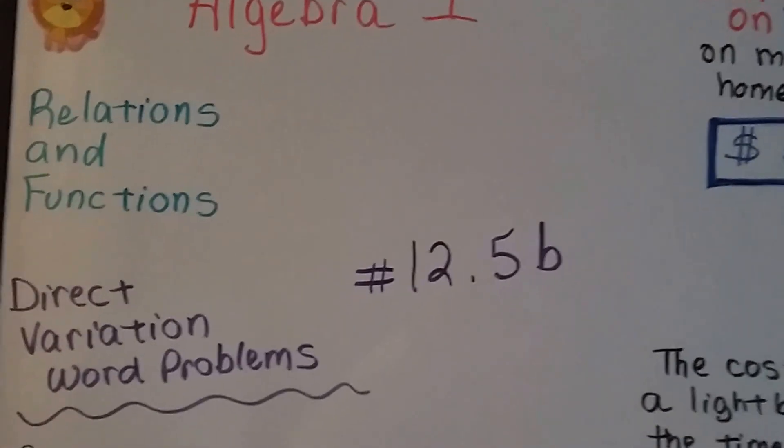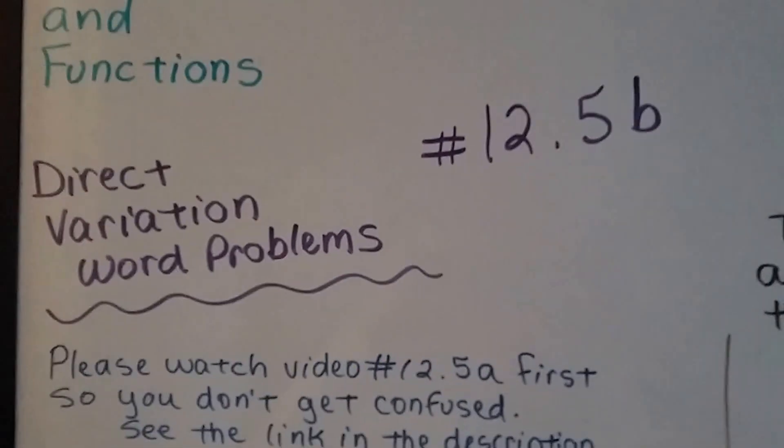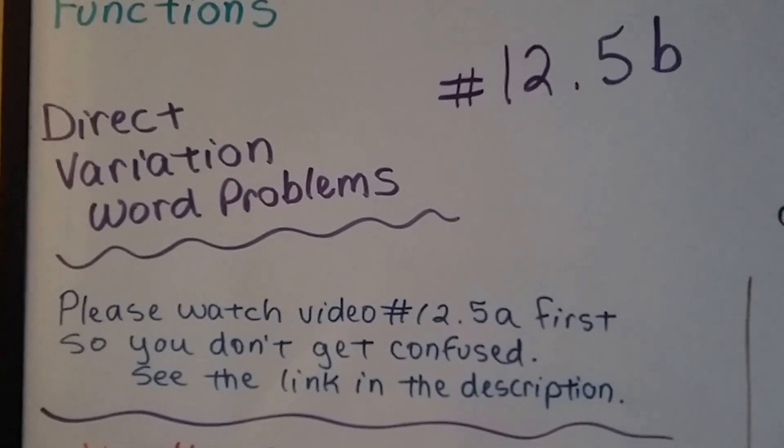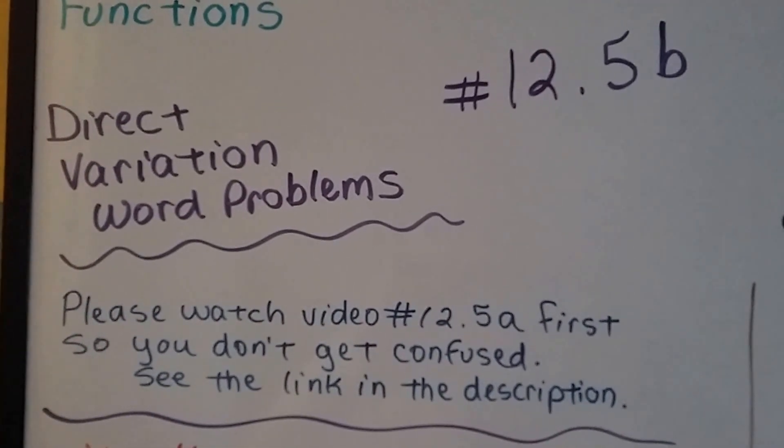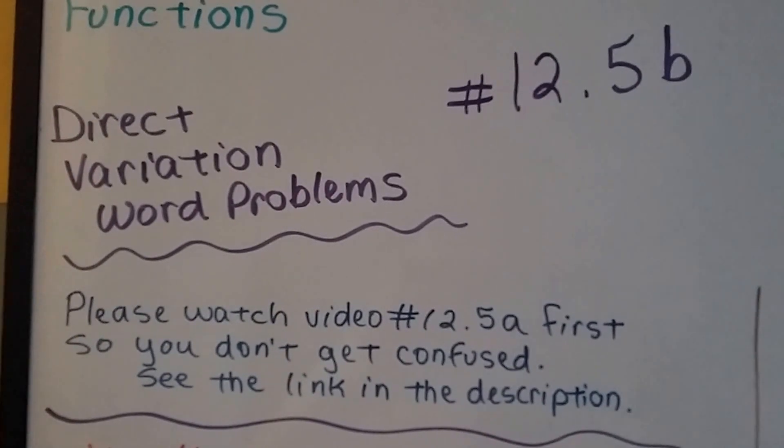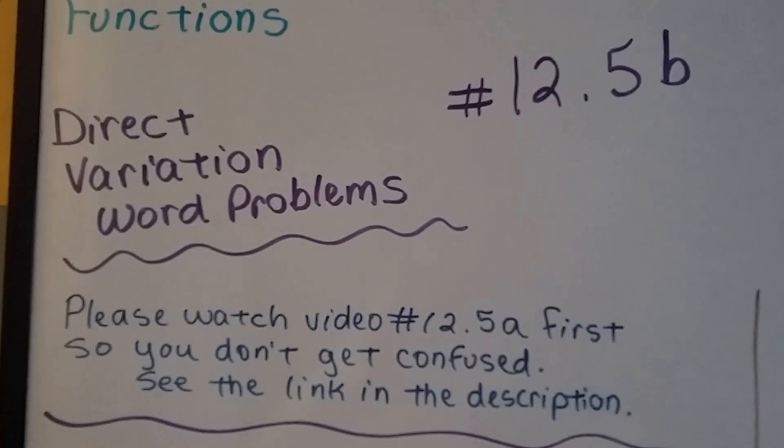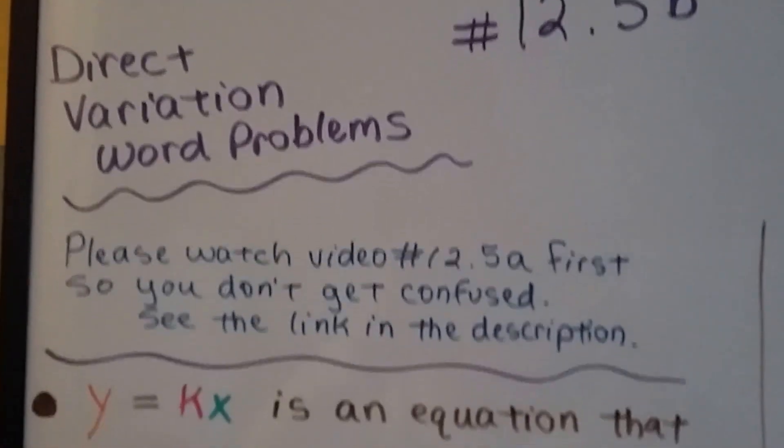Algebra 1, 12.5b, Direct Variation Word Problems. Now if you haven't seen video 12.5a yet, you really need to watch that one first so you don't get confused. There's a link in this video's description so you can just click on it. Make it easy for you.